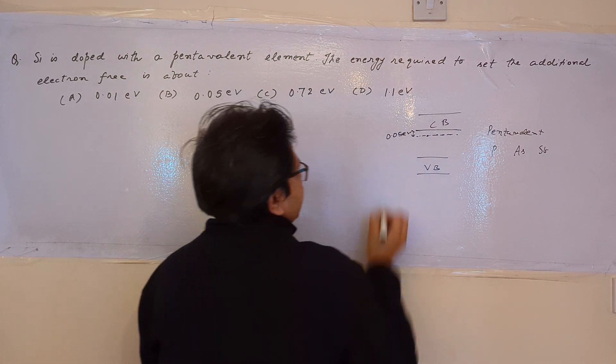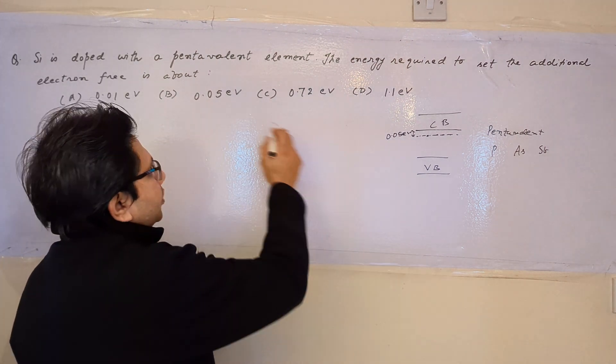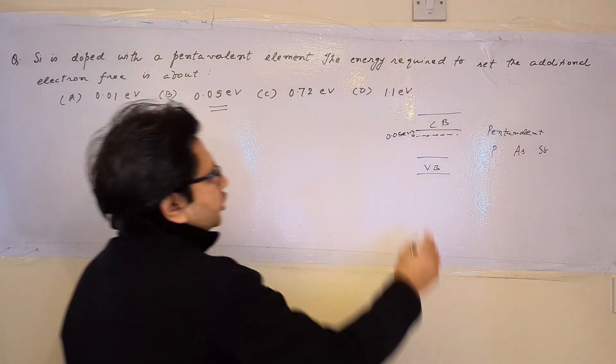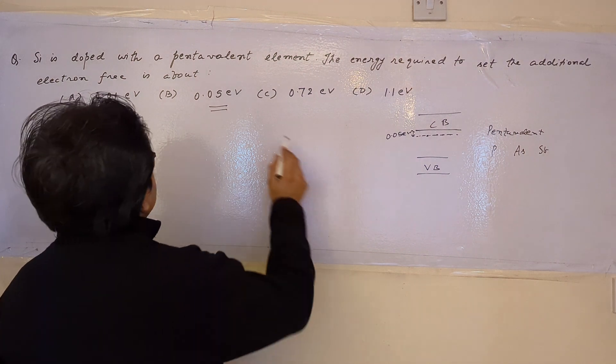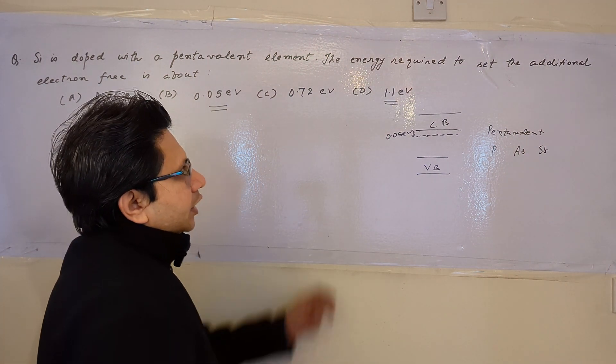There is a band gap of nearly 0.05 electron volts. This is the band gap which is there in the case of pentavalent impurities. The rest of the figures, for example 1.1 electron volts, this is the band gap for intrinsic material.